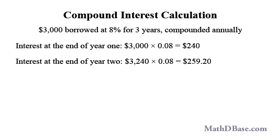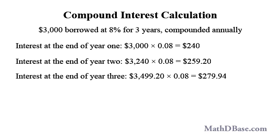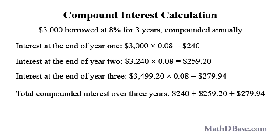The new principal is the first year's principal plus the second year's interest, or $3,240 plus $259.20, which is $3,499.20. At the end of year 3, the interest is 8% of $3,499.20, which is $3,499.20 times 0.08, or $279.94. The principal at the end of the third year is $3,499.20 plus $279.94, or $3,779.14. The total compound interest after three years is $240 plus $259.20 plus $279.94, which equals $779.14 — the same as the principal at the end of the third year minus the initial principal, or $3,779.14 minus $3,000.